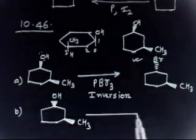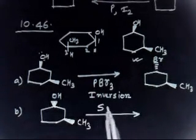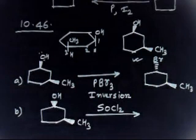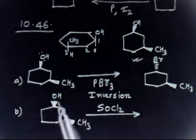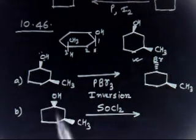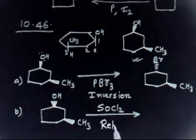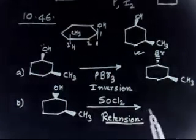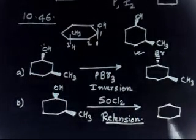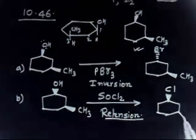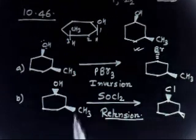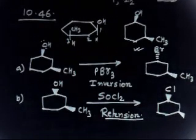Part B: here we have OH and here we have CH3. If this reacts with SOCl2, OH can be removed and Cl added. But remember, in the presence of SOCl2 the reaction goes with retention of configuration. So you will have Cl here and CH3 here at position 1, 2, 3 — it remains as it is. This reaction goes with retention of configuration.